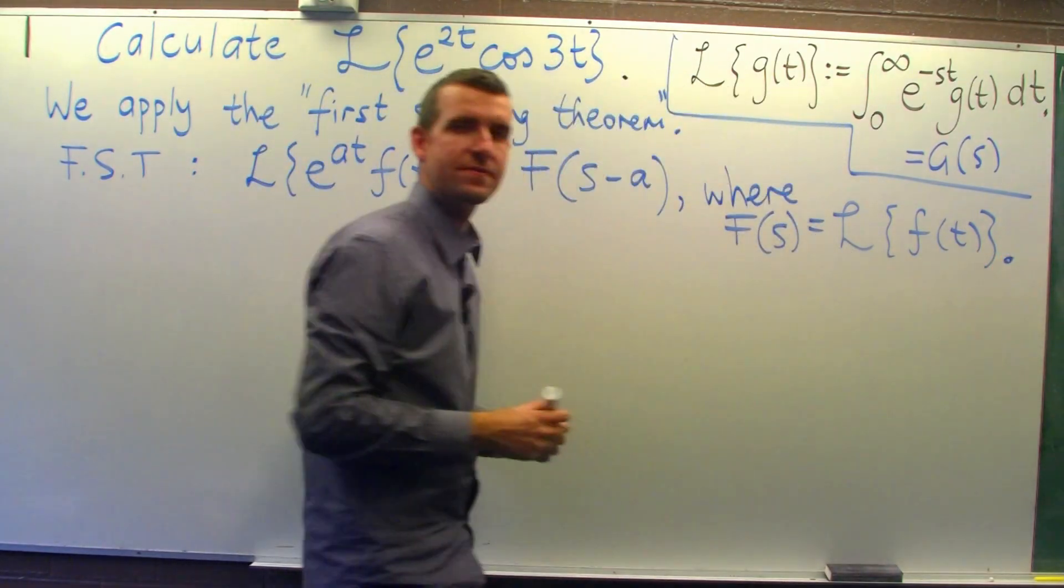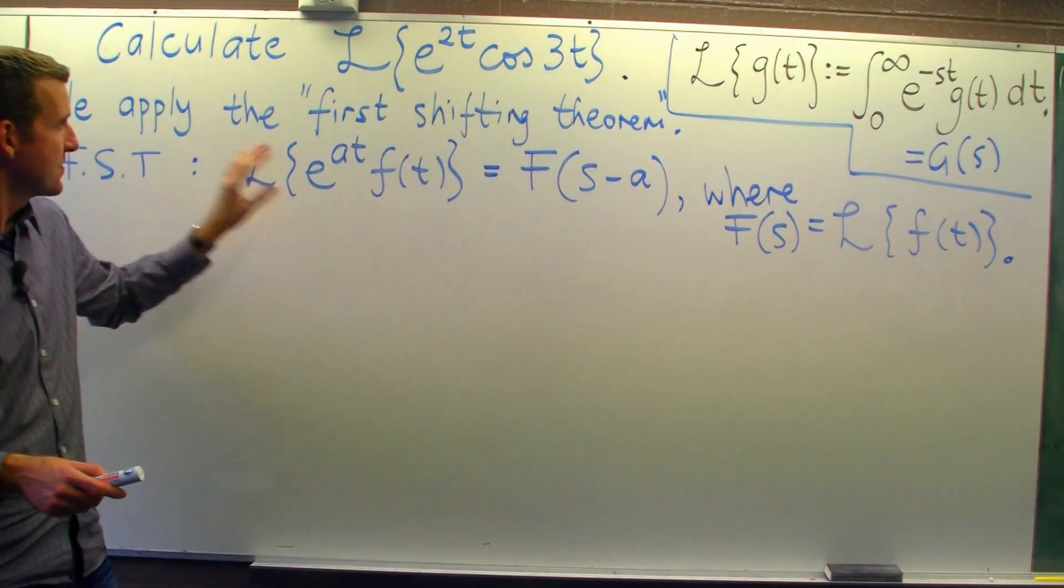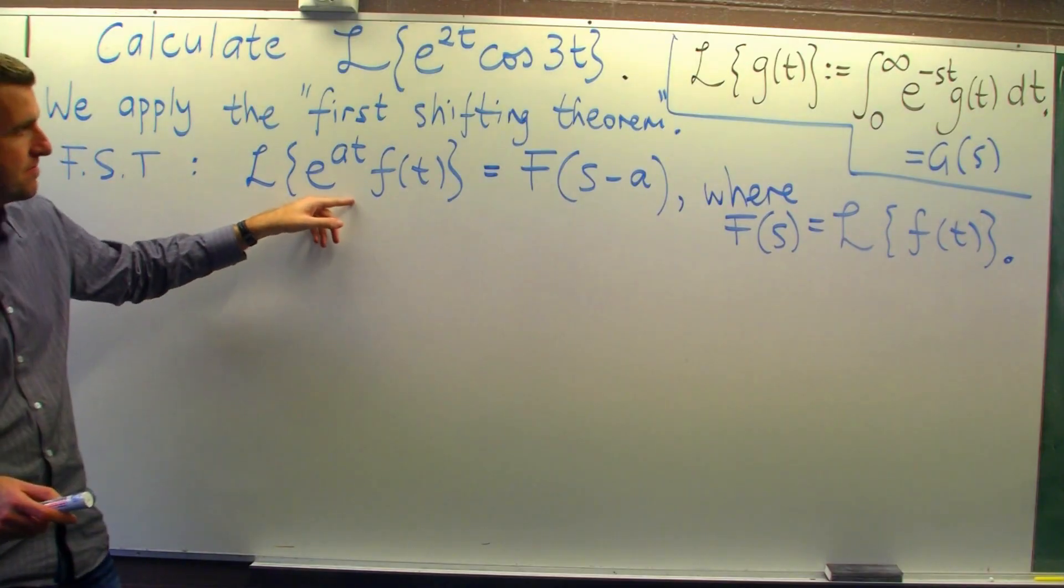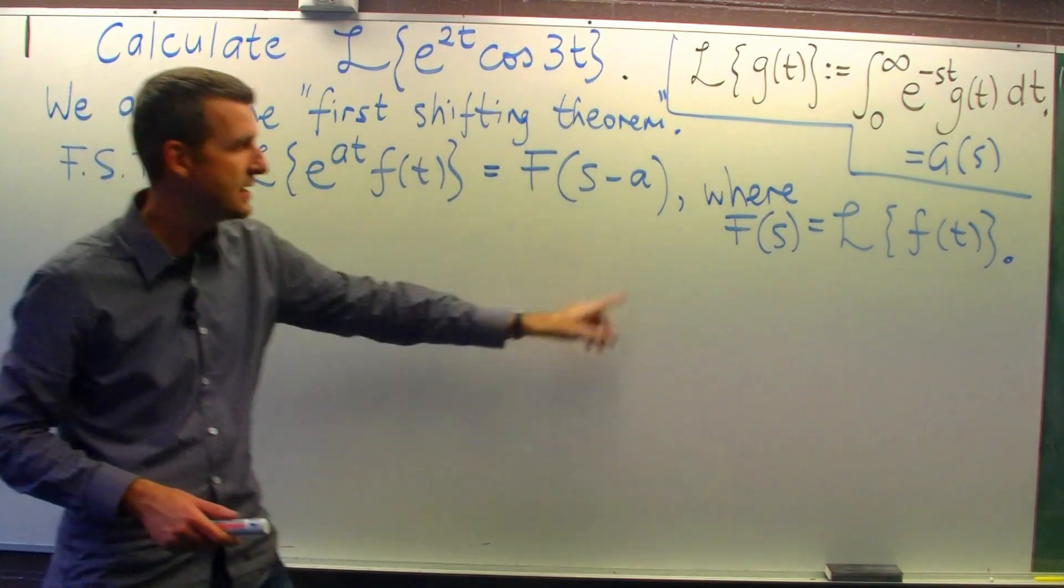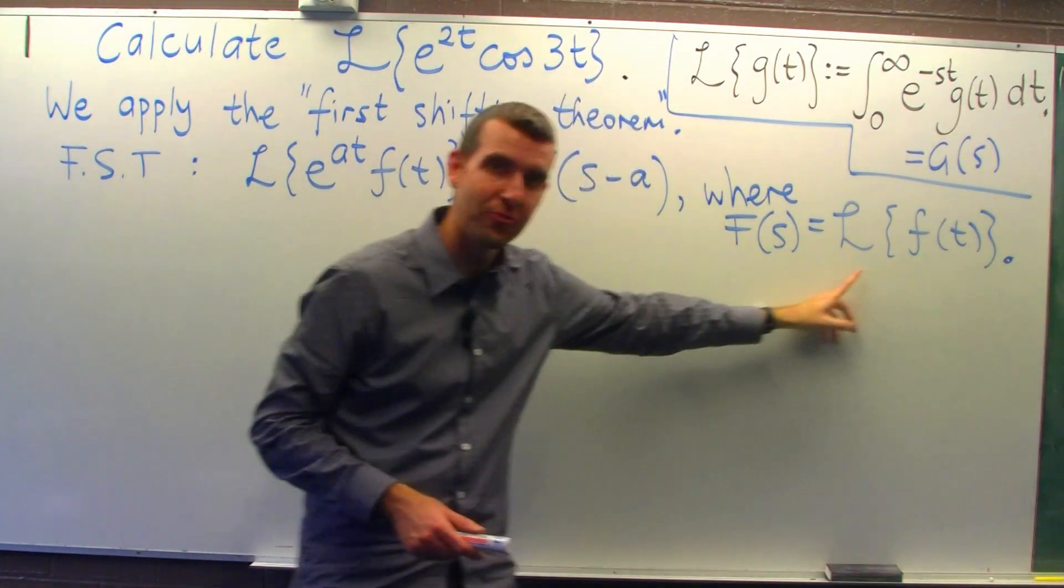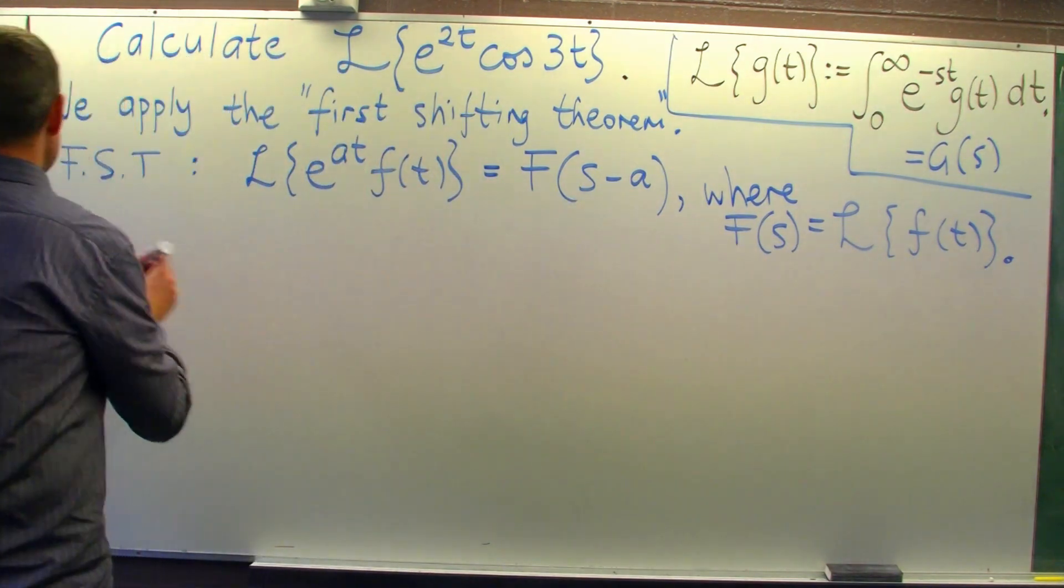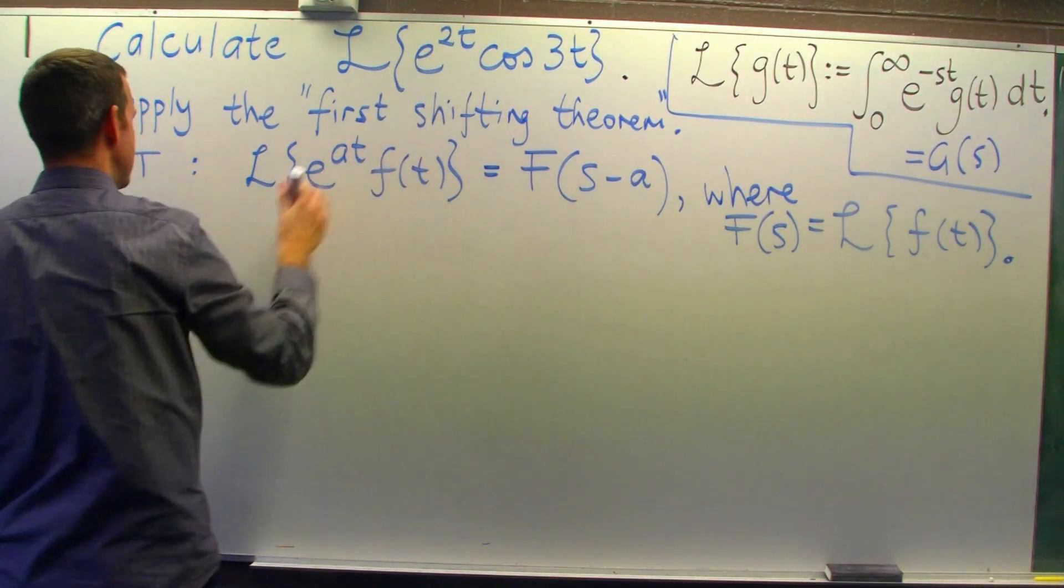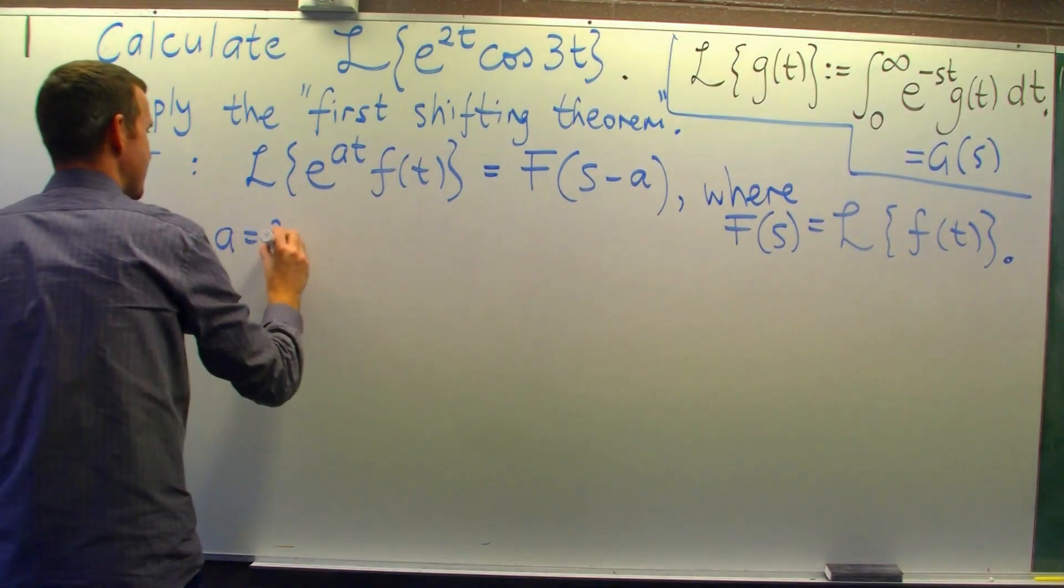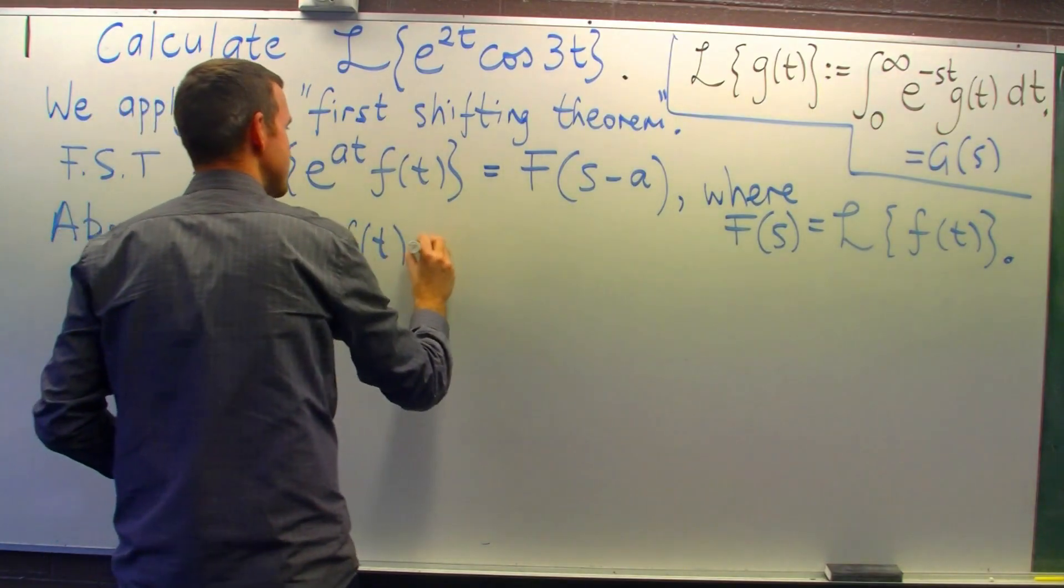Okay, so the sequence of events is recognize that we have an exponential times a function of t. Then we can use the first shifting theorem. Identify what little f is. Here it's cos 3t. Calculate the transform of little f and then shift that transform. Okay? So how does this relate to our problem? Well, a is 2 and little f of t is going to be cos 3t.